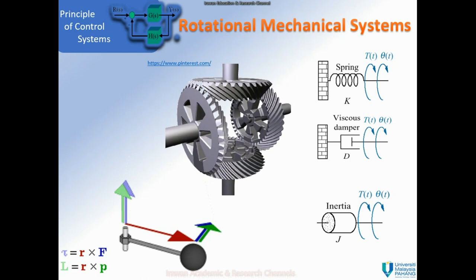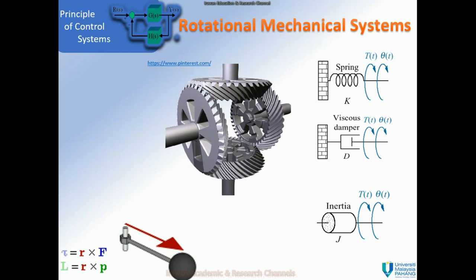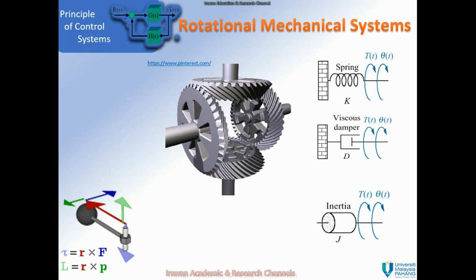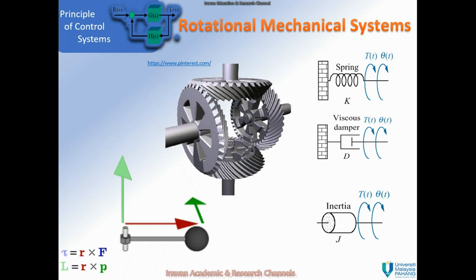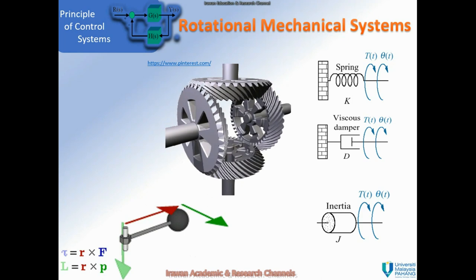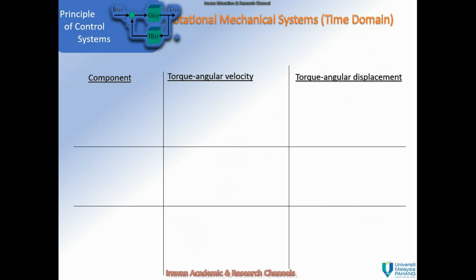Let's continue with the rotational mechanical system, which is one type of mechanical system covered in these topics. The difference between rotational and translational systems is that translational systems consider mass, while rotational systems consider inertia. The components for the rotational mechanical system are divided into three: a spring, a viscous damper, and inertia.